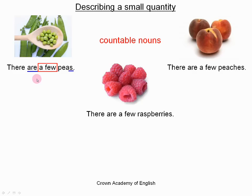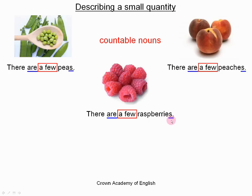Also, the verb must be in the plural form. So we say 'there are a few peaches' — it's a countable noun in the plural, so we add S or ES for peaches, and the verb is also in the plural form. It is the same with raspberries: we put the noun in the plural form, which for raspberry means adding IES. We say 'a few' because it is a countable noun, and the verb is in the plural form — 'there are.'